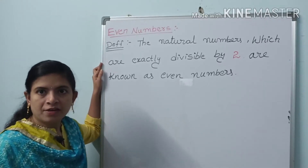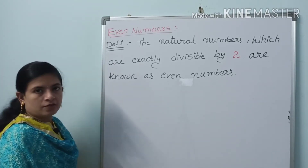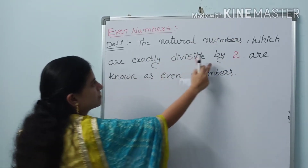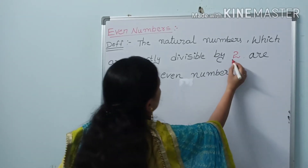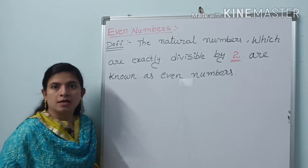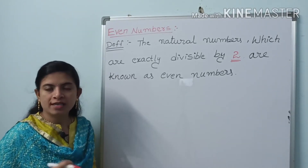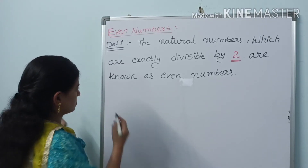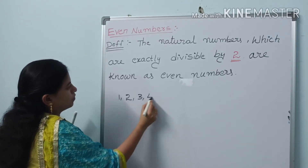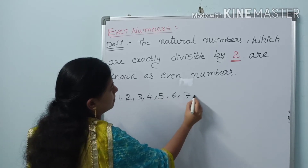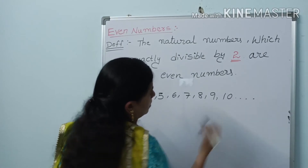Before entering into the topic, we should know about natural numbers. Natural numbers play a very crucial role in the number system. We used natural numbers in the whole number set, and these natural numbers will also come in all of the topics we learn later. Natural numbers are: 1, 2, 3, 4, 5, 6, 7, 8, 9, 10, and so on.